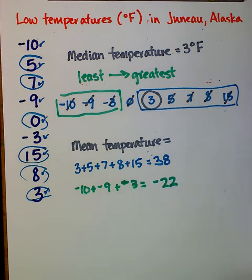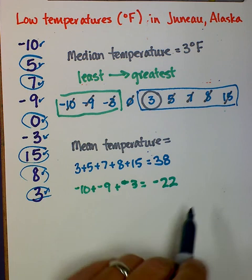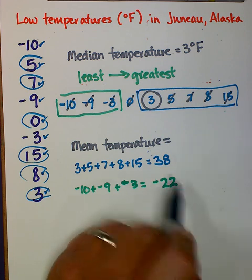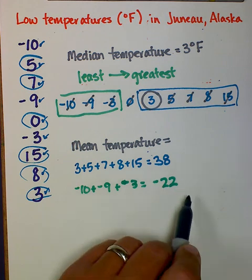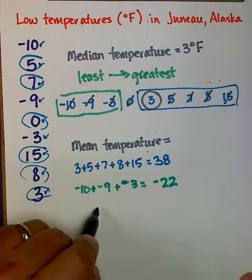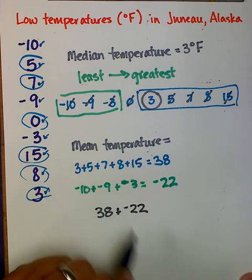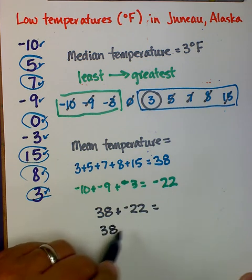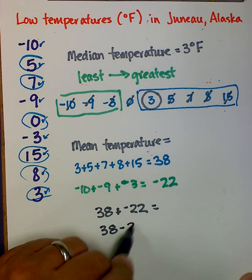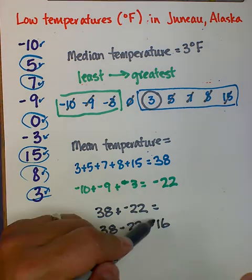So the total of my temperatures above or below 0 is going to be the sum of 38 plus negative 22. I can also write that as 38 minus 22, so 38 minus 22 is 16. So that's the total.